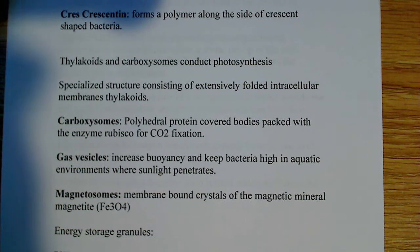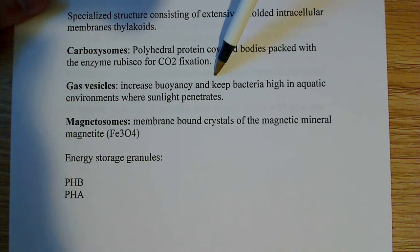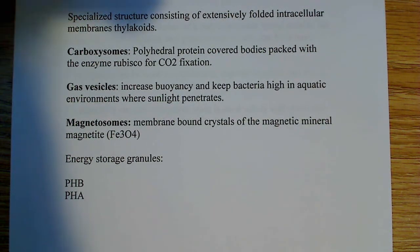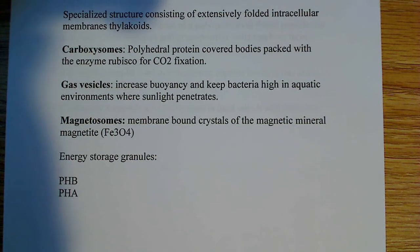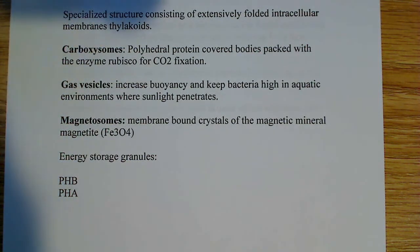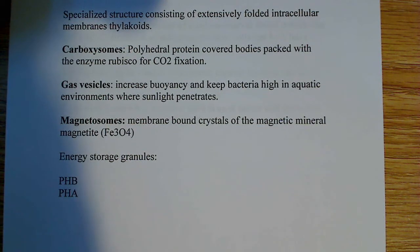So you do have thylakoids, carboxysomes, and also gas vesicles. You might be wondering why gas vesicles are considered a specialized structure. Well, they play a sort of important role for some of these photosynthetic aquatic organisms. You want to increase your buoyancy, and the reason you want to increase your buoyancy is to keep the bacteria high enough in the water where they can still get light from the sun, especially if you're photosynthetic. If you're photosynthetic, you need the light in order to survive, in order to produce carbohydrates and store energy as ATP.